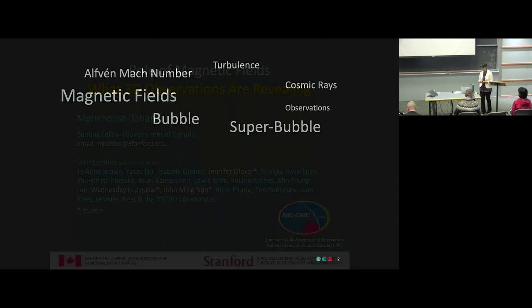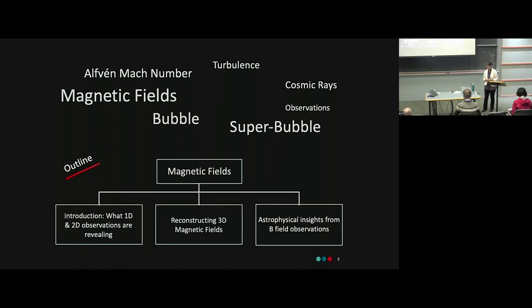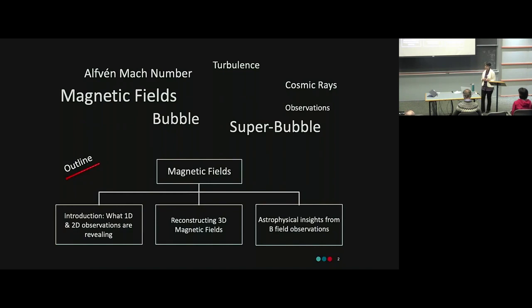In the past few days we've been hearing some terms over and over again. I've listed some that are important for the research I'm presenting today. I'm talking about three-dimensional magnetic fields. This is an observation talk and a magnetic field talk. I'll start by discussing what 1D and 2D magnetic field observations in the past decade have been telling us, then why we need 3D observations and the techniques developed to reconstruct complete 3D magnetic fields in position space — real 3D.